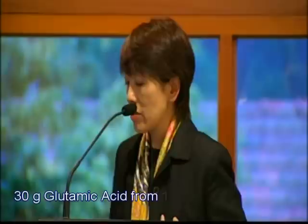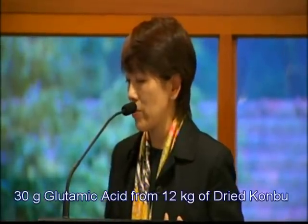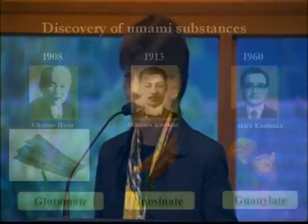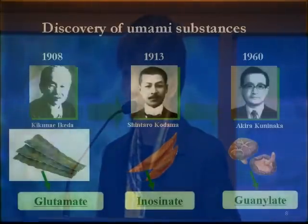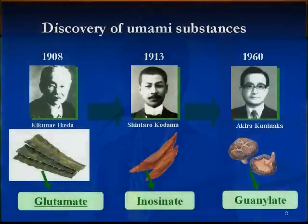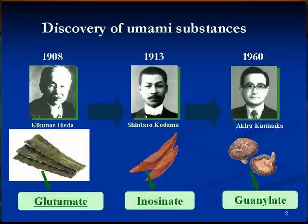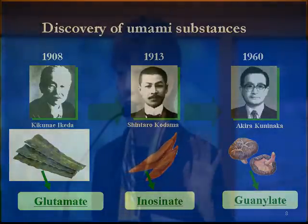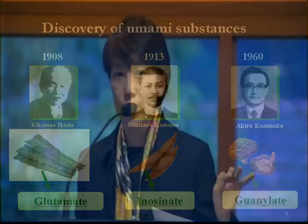Finally, in 1908, Professor Ikeda isolated 30 grams of glutamic acid from 12 kilograms of dried kombu, and he named the taste umami. After the discovery of glutamate from kombu, his disciple Mr. Shintaro Kodama isolated inosinate as another umami substance from dried bonito. You can see real dried bonito in the demonstration by Shimbo. The third umami substance is guanylate, which is rich in dried shiitake mushrooms. All three materials — dried kombu, dried bonito, and dried shiitake mushrooms — are very popular and important food materials for preparing Japanese dishes.